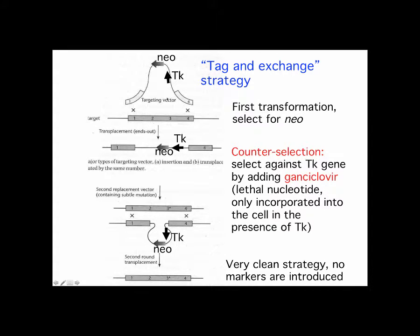Here we have the transformation process: you're trying to get recombination to place both your neomycin resistance and thymidine kinase genes through homologous recombination into a specific part of the genome. After electroporation, you select for neomycin resistance. Some cells will have random incorporation at various genome locations. Then you do a counter-selection, including a precursor that is fine by itself but lethal in the presence of thymidine kinase. That piece gets removed. There are various ways to remove it, including CRE-LOX recombination, which we'll discuss shortly.